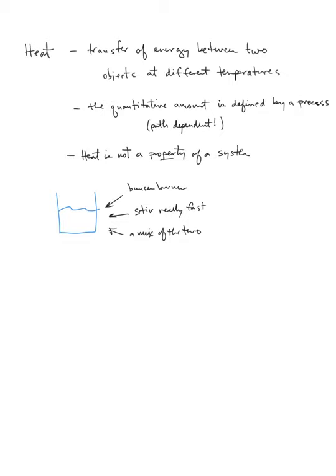Heat is a different type of transfer of energy. In this case, it's the transfer of energy between two objects that are at different temperatures. The quantitative amount is defined by a process. It's path dependent. I don't want you to think of heat as a property of a system.